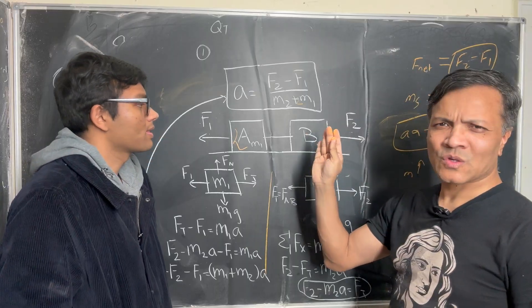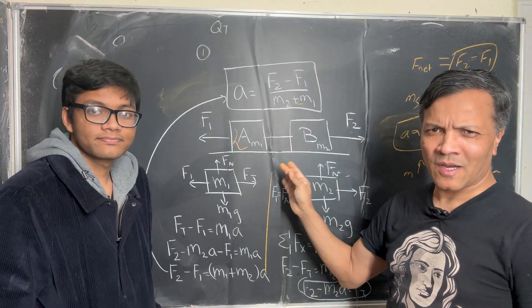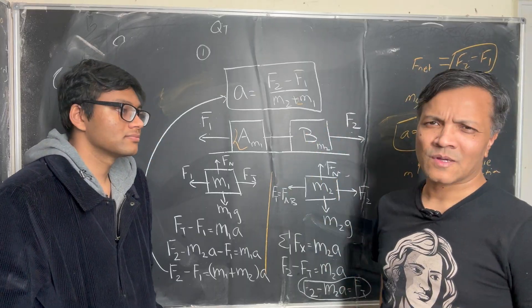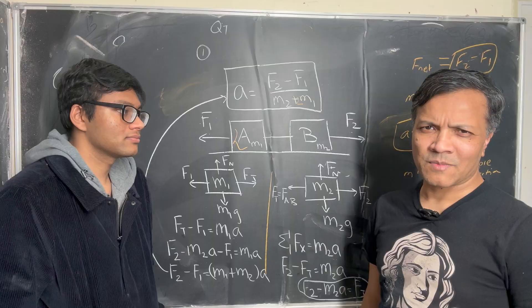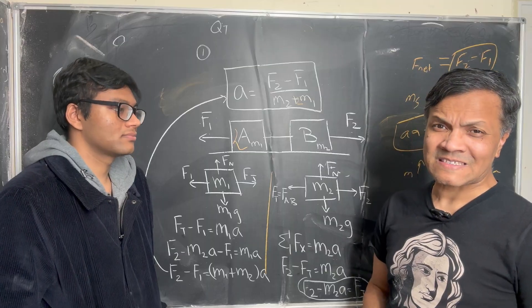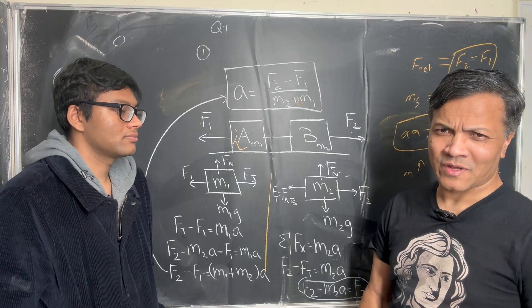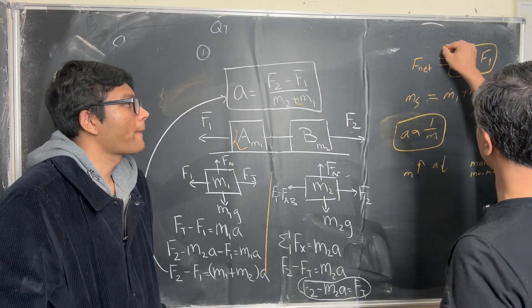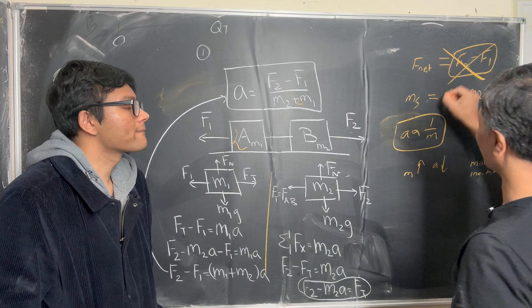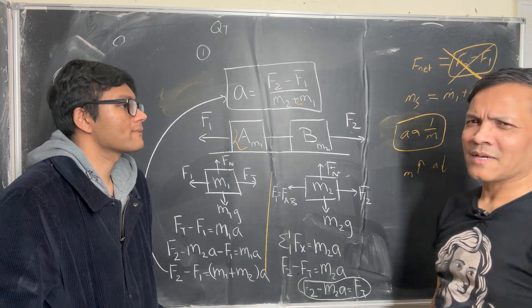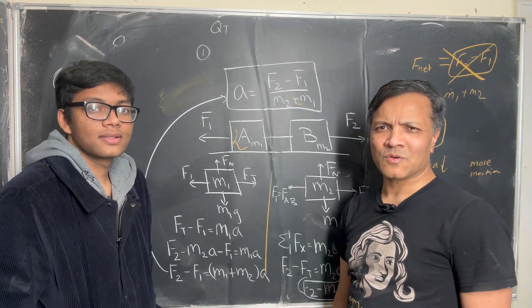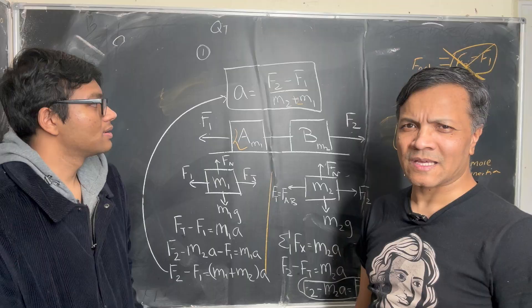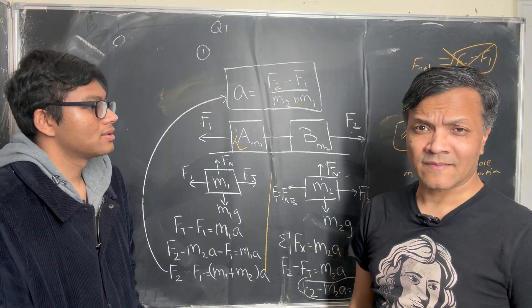This box always wanted to move with constant velocity in a straight line forever. But this external force made it impossible for the box to move with constant velocity in a straight line.